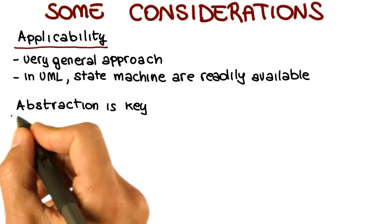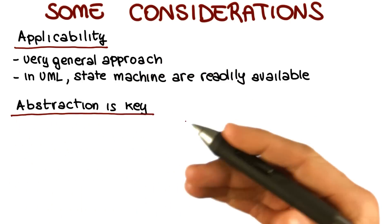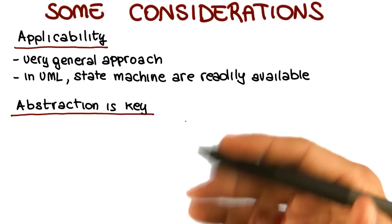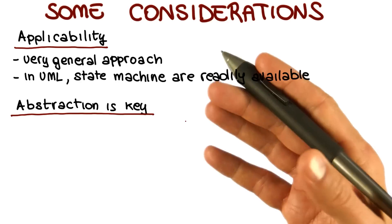Another important point is that abstraction is key. You have to find the right level of abstraction. The bigger the system, the more you have to abstract if you want to represent it with a model and in particular with a finite state machine.